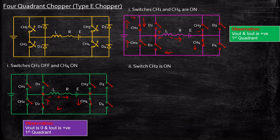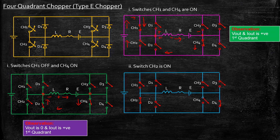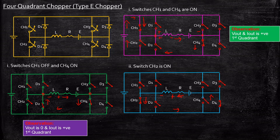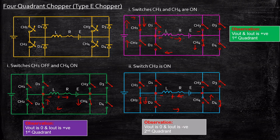Now let's consider Case 2 when switch CH2 is turned on alone. The back EMF, or the battery representing the load, acts as an energy source and starts charging the inductor with polarity plus and minus. Since minus is connected to the cathode of D4, D4 is forward biased. Current flows from the energy source E, through this path, through D4, and circulates in that direction. CH2 and D4 create a short circuit, so Vout is zero, while Iout is negative according to our convention.